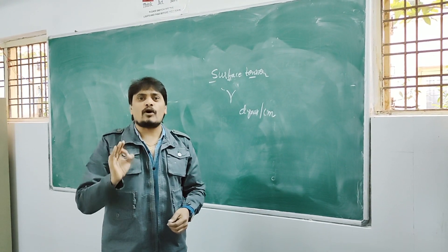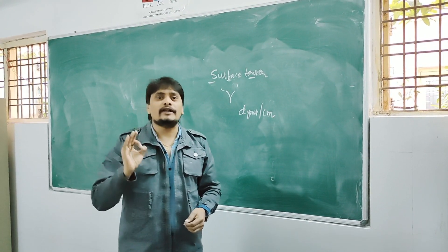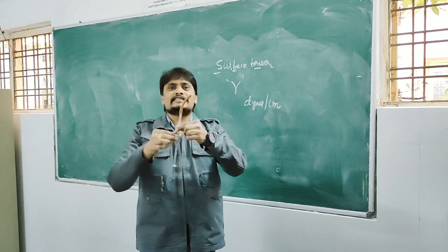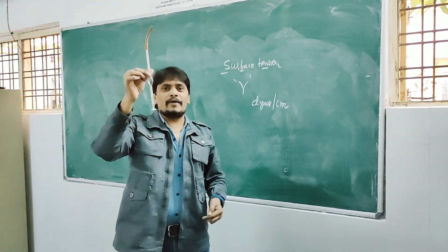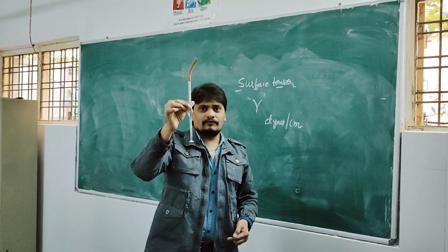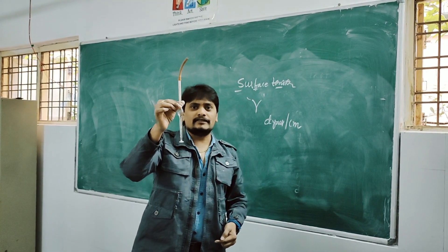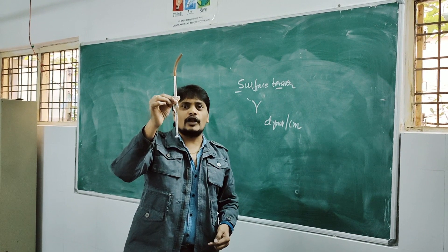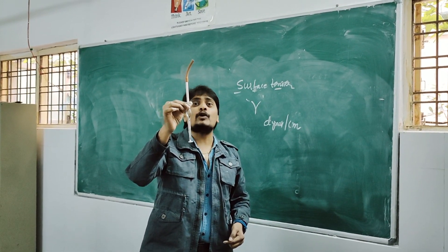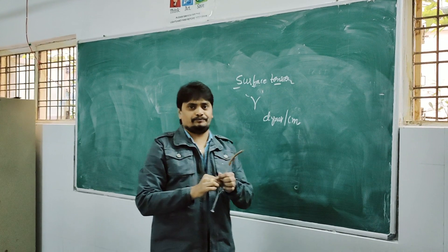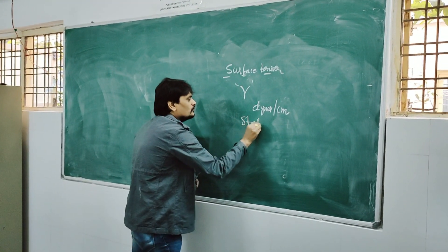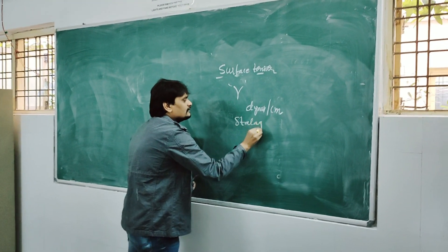Now let us see what apparatus is used in order to determine the surface tension of the unknown liquid. The name of this apparatus is stalagmometer.